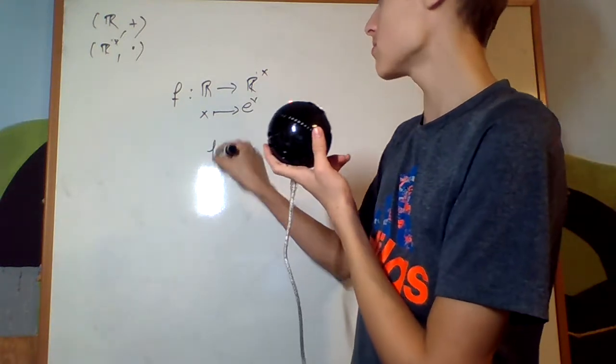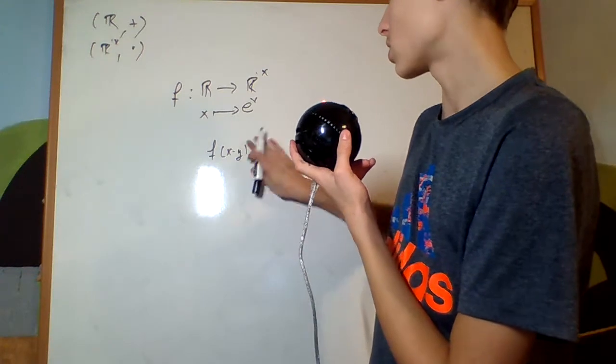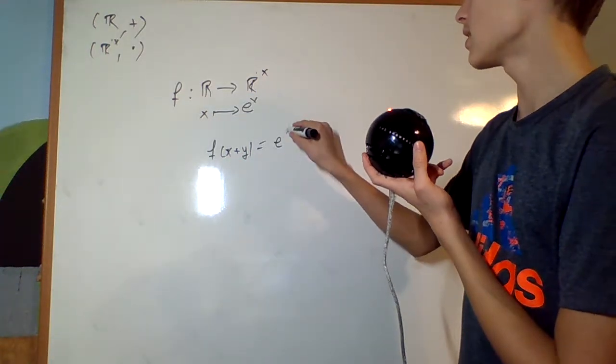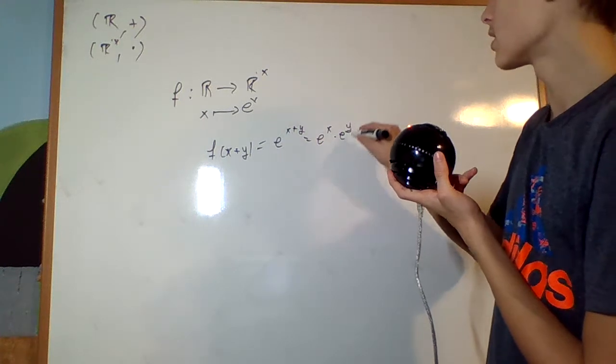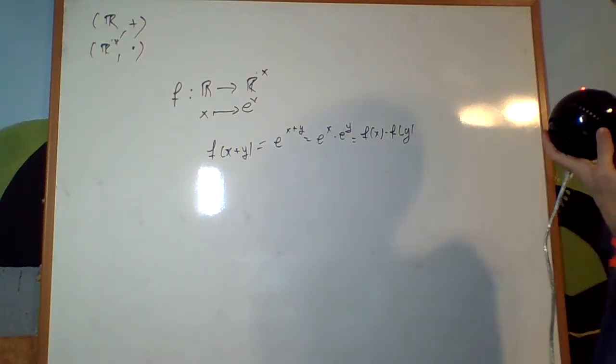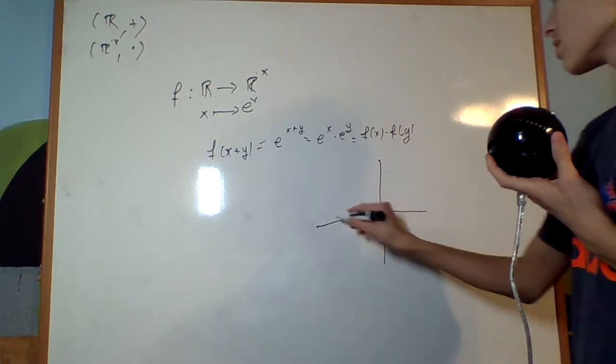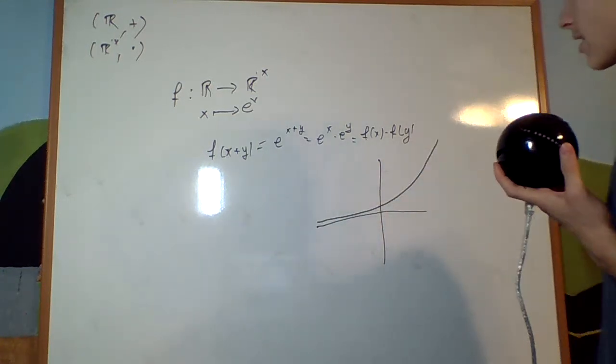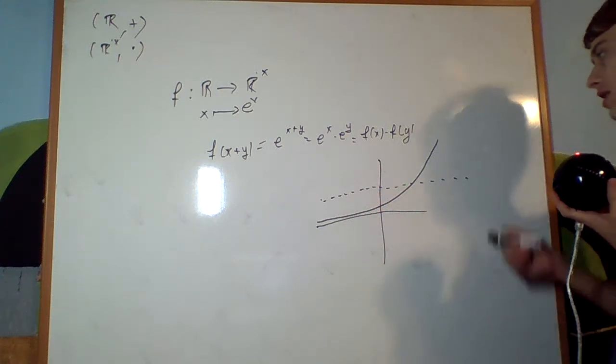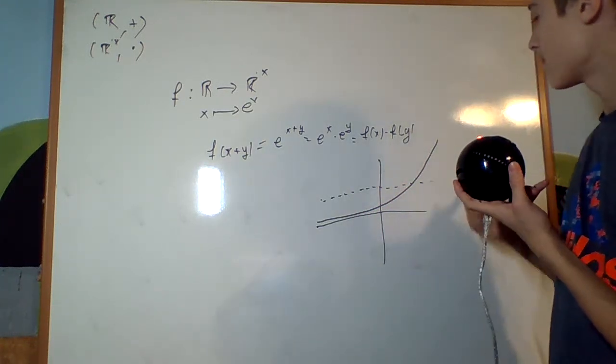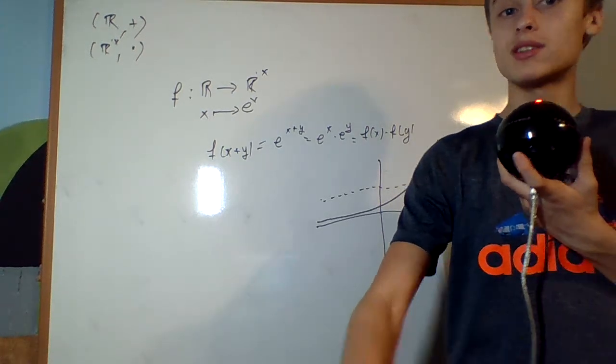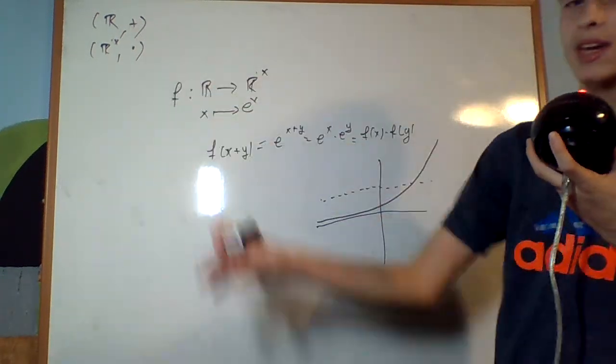Why is this a homomorphism? Because if I do f of x plus y, remember? f of x plus y, because that's our operation here. Plug it in, e to the x plus y. Oh, but that's e to the x times e to the y. Oh, but that's f of x times f of y. It's a homomorphism, and it's obviously bijective, right? Because if you remember the graph of e to the x, it looks something like that. And you can see, at a single point, there are no matched values. And it also completely covers the entirety of the positive real numbers. Thus, we have a bijection, that's a homomorphism, and thus, R and R cross under multiplication are isomorphic.